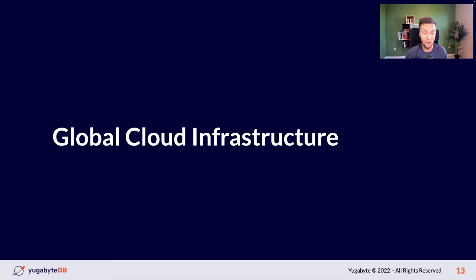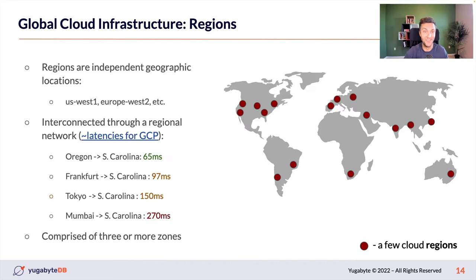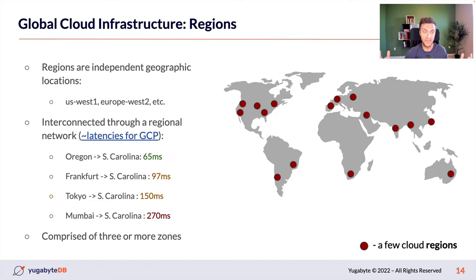Let's quickly remind ourselves how a typical global cloud infrastructure looks like. Every public cloud consists of regions — independent geographic locations scattered around the globe. You've likely heard of US West 1, Europe West 2, or US East North Virginia. These regions are interconnected through a regional network. Taking Google Cloud Platform as an example, the round-trip latency between Oregon (US West) and South Carolina (US East) is relatively fast at around 65 milliseconds, which satisfies most applications unless dealing with trading platforms.